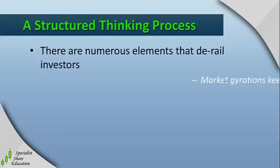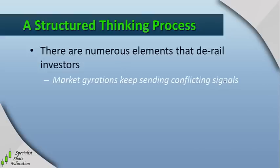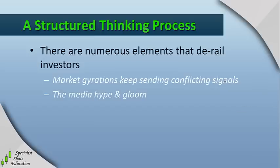These elements are just the day-to-day market gyrations that keep sending conflicting signals to investors. Sometimes we see prices go up or go down completely in conflict with maybe an announcement that the company's made, and that really confuses investors. We have the media who is constantly looking to sensationalize with either a lot of hype or a lot of doom and gloom, and that makes it very difficult for investors to continue with a consistent line of thought.